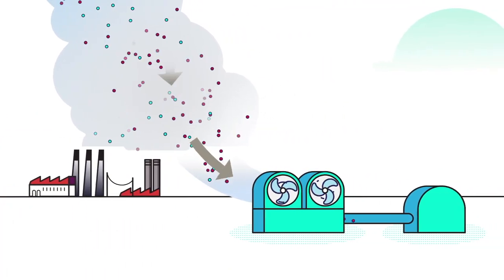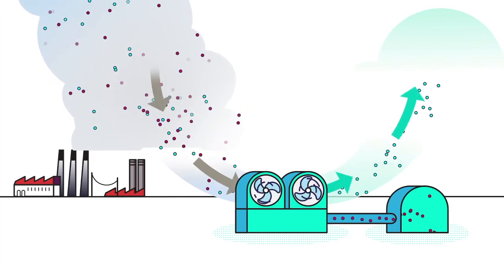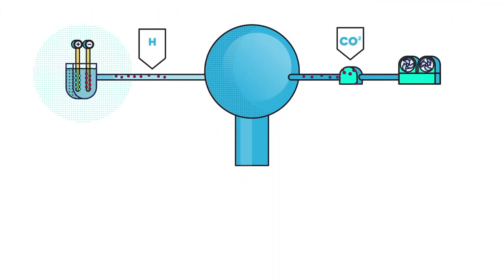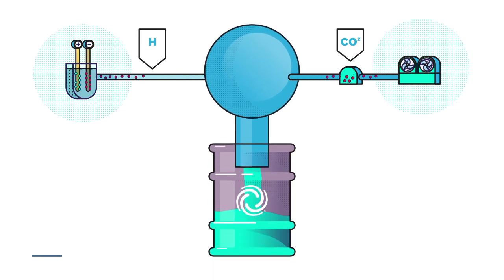Via a filtration process, we will directly capture and condense CO2 in the atmosphere, purifying the air. We will then combine the hydrogen obtained by electrolysis with the CO2 captured from the atmosphere through a process called synthesis.